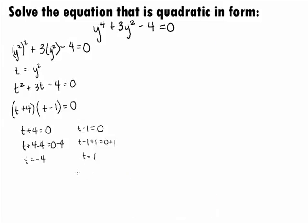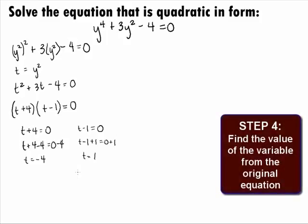Even though we found two values, we are not done yet. Keep in mind that we are finding a solution to the original equation and that the variable we substituted in Step 2 is not our original variable. We still need to find what y is equal to. We need to do Step 4, which is to find the value of the variable from the original equation. We can use the substitution t equals y squared and then solve for the original variable.